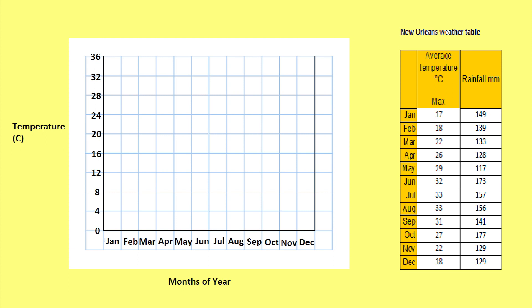On the left hand Y axis we will plot the temperature in degrees Celsius. Since 33 degrees is the highest temperature in the table, we will number the Y axis from 0 to 36. On the right hand Y axis we will label the rainfall in millimetres from 0 to 180.